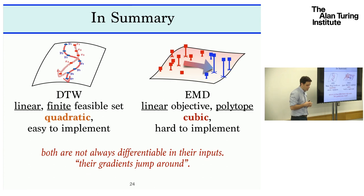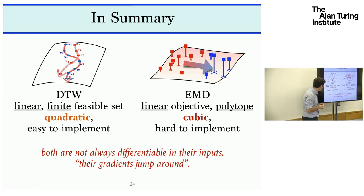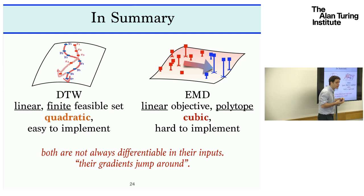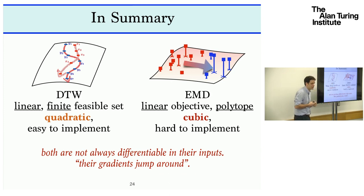To summarize: DTW has a linear objective over a finite set of feasible matrices — the Delanoi paths — is quadratic time, and very easy to implement. EMD also has a linear objective but over a continuous feasible set (a polytope), is cubic or super-cubic, and hard to implement. What also links both is that they are not differentiable in their inputs — and that is a fairly big problem if you want to use these quantities as loss functions in machine learning.